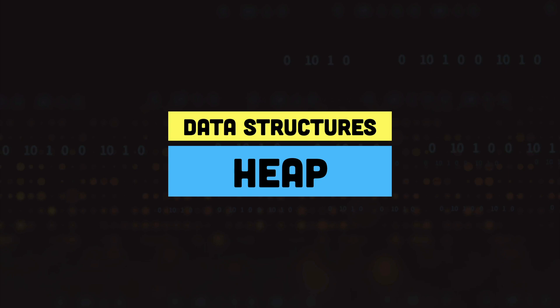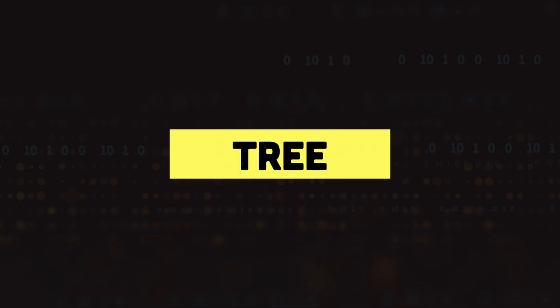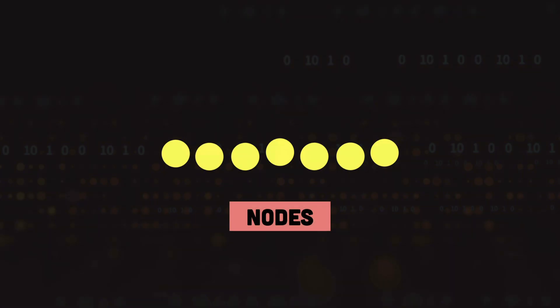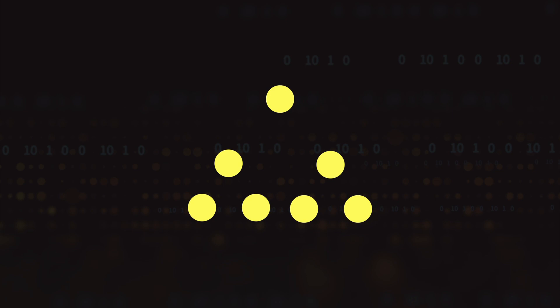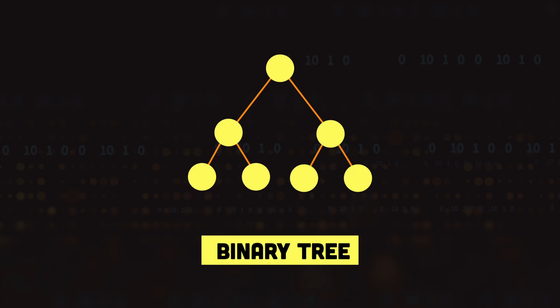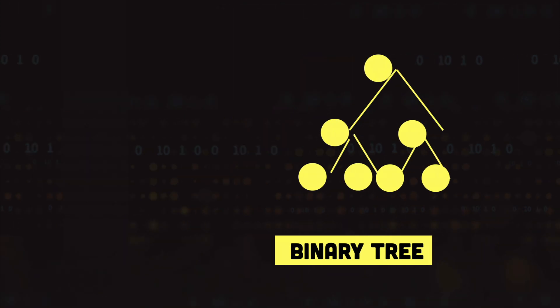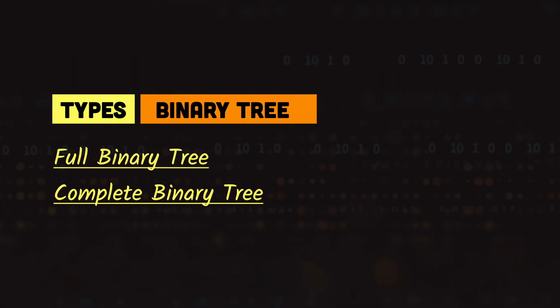Hey everyone, this is Kamran and our topic for today is Heap Data Structure. In our last video we looked at the tree data structures where we used to have nodes arranged in a hierarchical order and they were connected using the edges. We also looked at the binary trees where each node of the tree could have maximum two children. There are different types of binary trees, but let's look at the full and complete binary trees before we talk about the heap data structure.